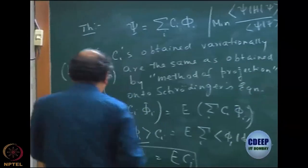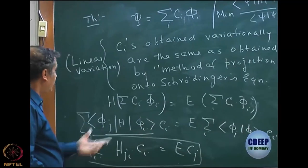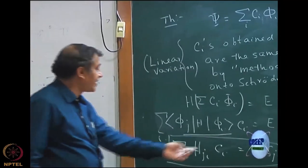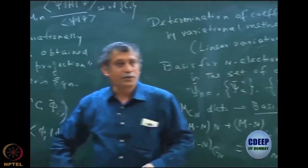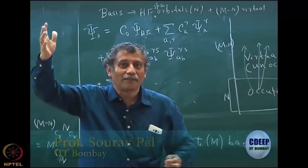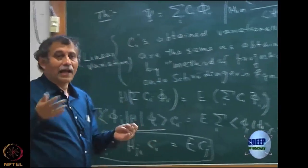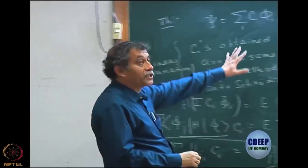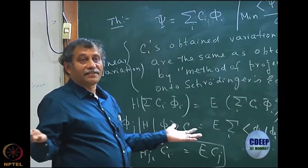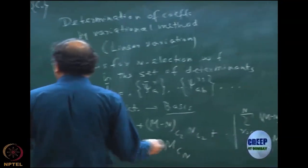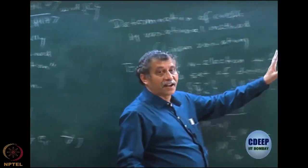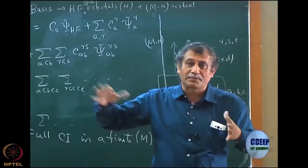I will first show this equivalence in the next class before actually deriving the CI equation by method of projection. The method is very simple: write the Schrödinger equation, project by a member of the basis, and you immediately get a matrix equation. I will explicitly write the basis functions as Hartree-Fock, psi AR, etc., apply Brillouin's theorem, and many things will follow. McDonald's theorem is for variation, so once I show the equivalence I can apply linear variation results to the CI framework.